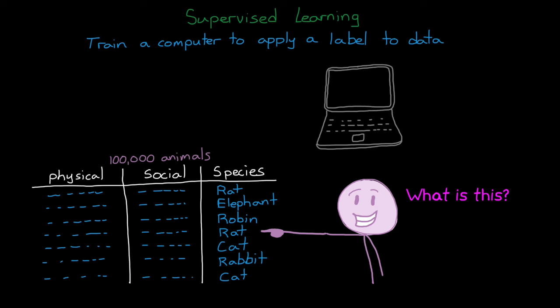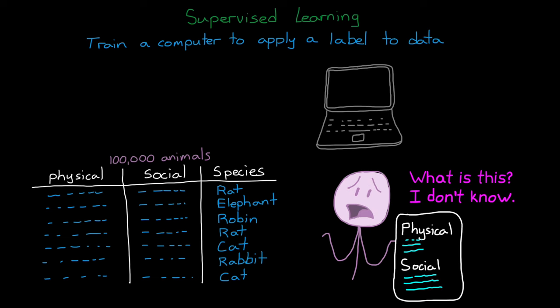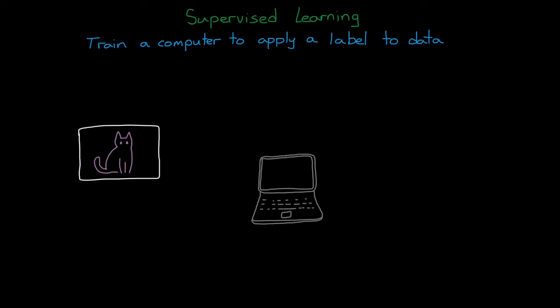And if we had enough training data to get a reliable model, we could then send through the input features for a new animal, one that we don't have labeled, and our trained model would apply the most probable species label to it. And supervised learning is probably the type of machine learning that most people are familiar with, because it's what allows computers to recognize pictures of cats, or your friends in photos.